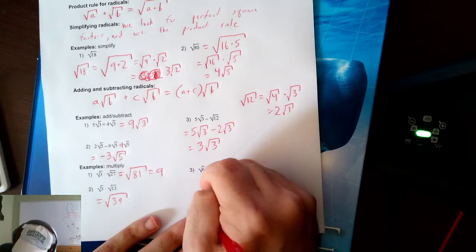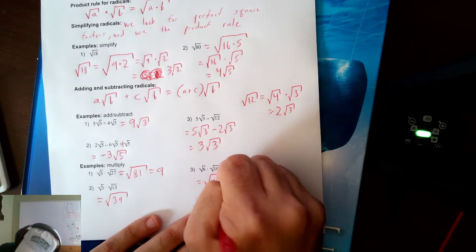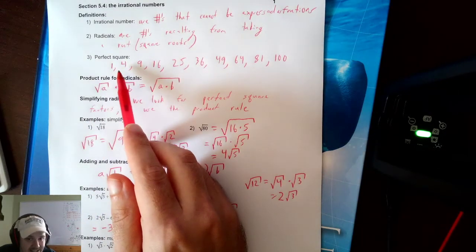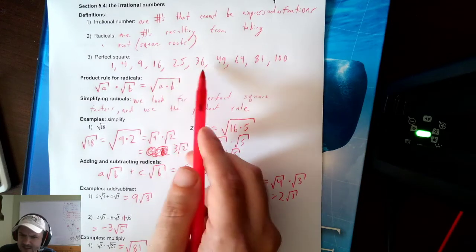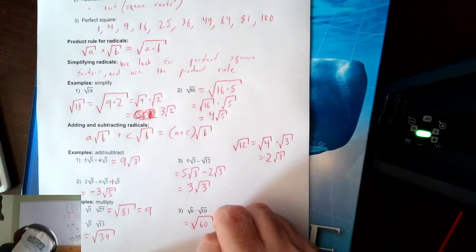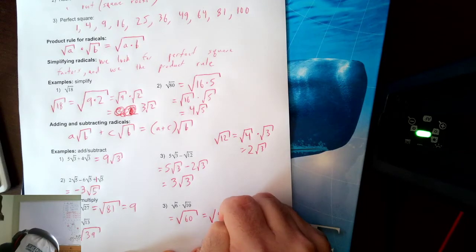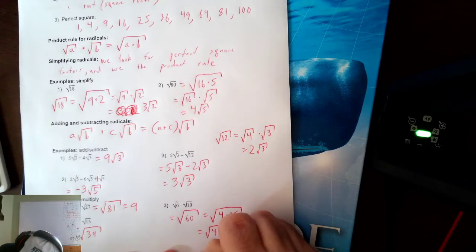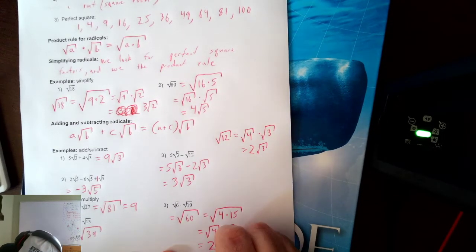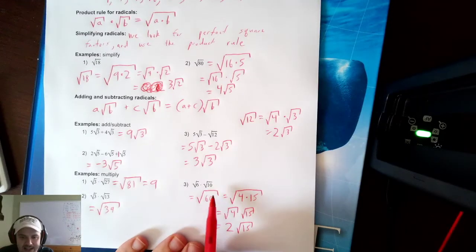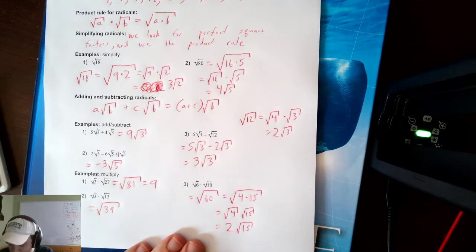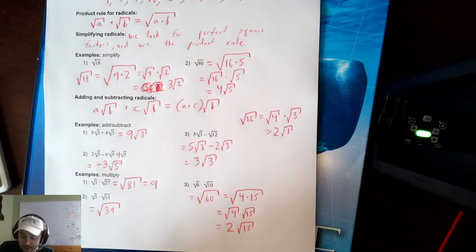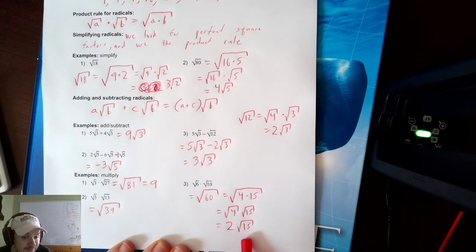Third example: square root of 6 times square root of 10 is square root of 60. Does 60 reduce? 4 divides 60 — 60 is 4 times 15 — so square root of 60 = square root of 4 times square root of 15 = 2 square root of 15. So square root of 10 times square root of 6 equals 2 square root of 15. We had to do a little work to get from the original to the simplified answer, so be careful with radicals.